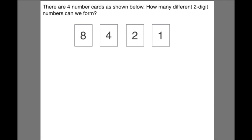Previously, when we do systematic listing, it seems like it is very tedious. For example, let's look at the question. There are 4 number cards as shown below. How many different 2 digit numbers can we form?